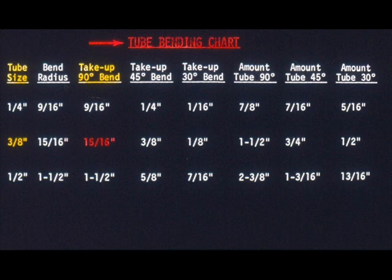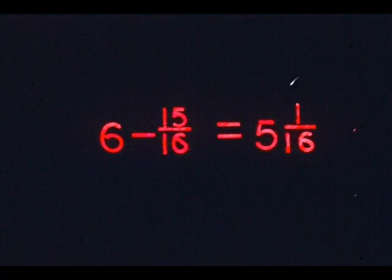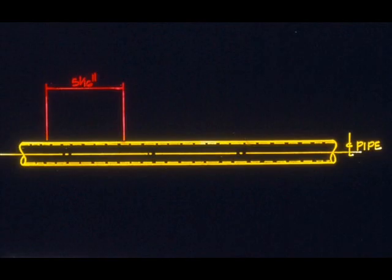Look on your tubing chart and locate three-eighths of an inch tubing. Follow the line across to the right until you locate the column for the take-up in a ninety-degree bend. The take-up, as shown on the chart, is fifteen-sixteenths of an inch. You will subtract this number from the length of the first leg — subtract fifteen-sixteenths from six inches. Your answer is five and one-sixteenths. Measure off five and one-sixteenths of an inch on your tubing and mark it. This mark is where your bend will begin.